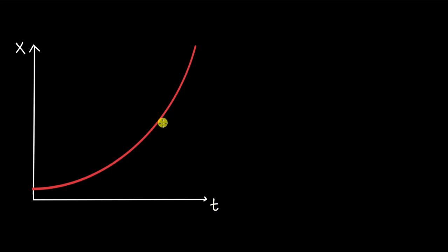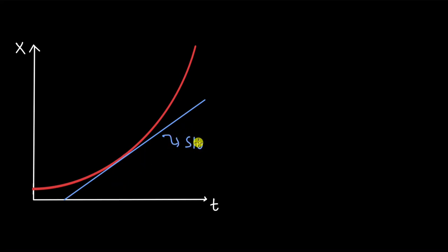This is the position-time graph of an object in motion with a changing velocity. We know that the slope of the tangent at any point gives us the instantaneous velocity of the object at that time instant. So the slope of this line gives us the instantaneous velocity at this time instant. In this video, we will see why the slope gives us the instantaneous velocity, and also look at an example where we study the position-time graph to figure out the instantaneous velocity of the object at different time instants.